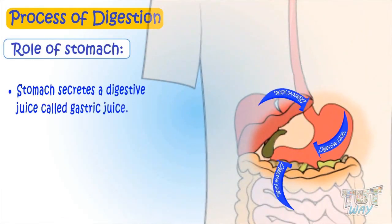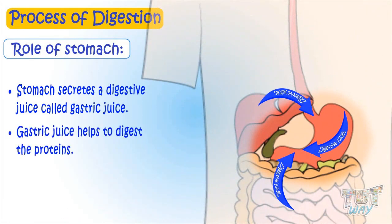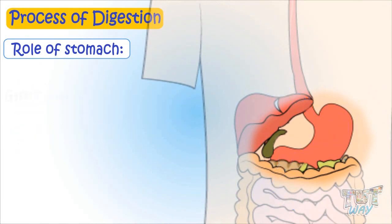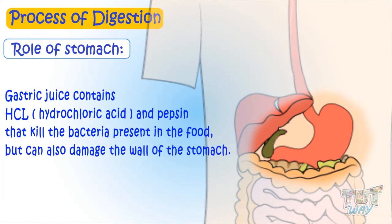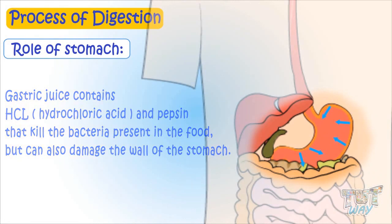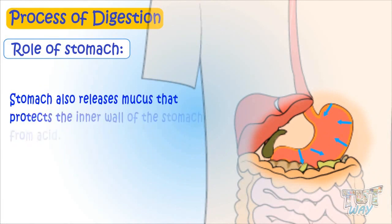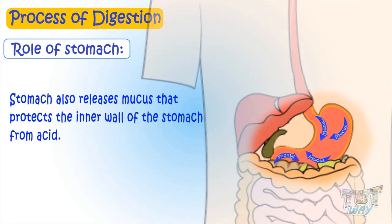The stomach secretes digestive juices called gastric juice that digests proteins. Gastric juices contain HCl and pepsin, which kill any germs or bacteria present in food, but can also damage the wall of the stomach. So the stomach releases mucus that protects the inner wall of the stomach from acid.